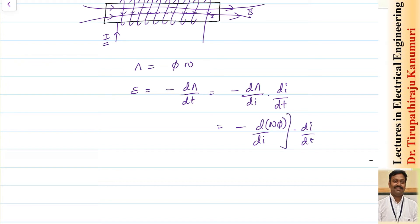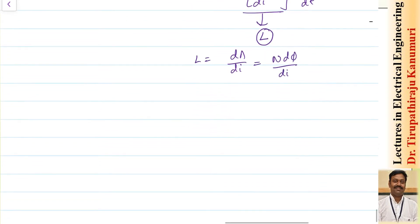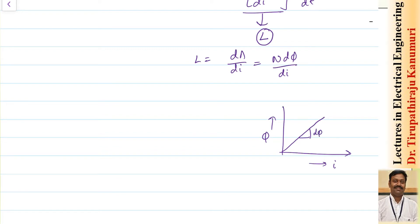The EMF can be written as minus d-psi by dt, which I expand as minus d-psi by di multiplied by di by dt. Since d-psi is nothing but N-phi, this becomes minus d/di of N-phi into di/dt. The term d-psi/di — the rate of change of flux linkages per unit current — is defined as the self-inductance L of the coil. Assuming flux varies linearly with current, d-phi/di equals phi/i, so L equals N-phi divided by i.